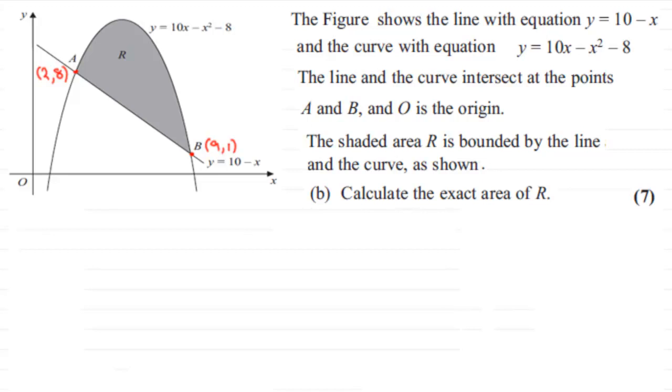So to do this, what I'm going to think about doing is dropping a line to the x-axis from point A and a line from B to the x-axis. So if we were to work out the area bounded by the parabola, this curve y = 10x - x² - 8...